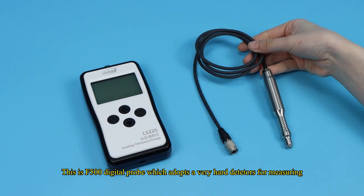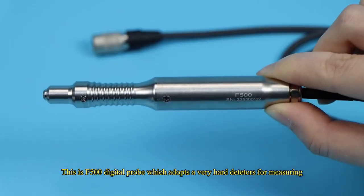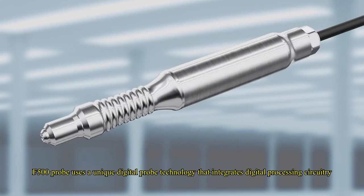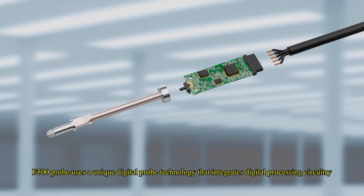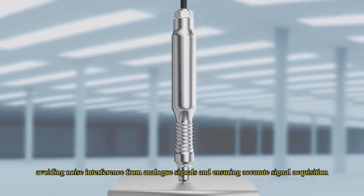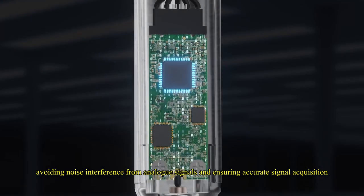This is F-500 digital probe which adopts a very hard detector for measuring. F-500 probe uses a unique digital probe technology that integrates digital processing circuitry, avoiding noise interference from analog signals and ensuring accurate signal acquisition.